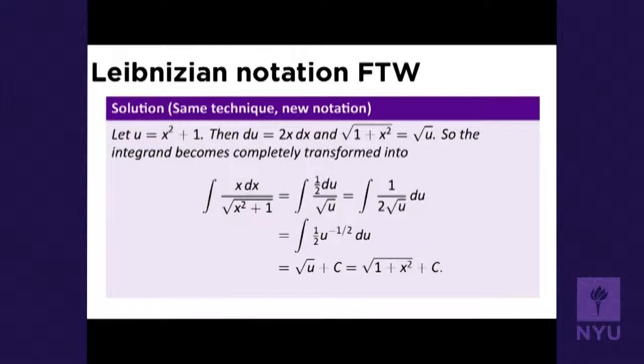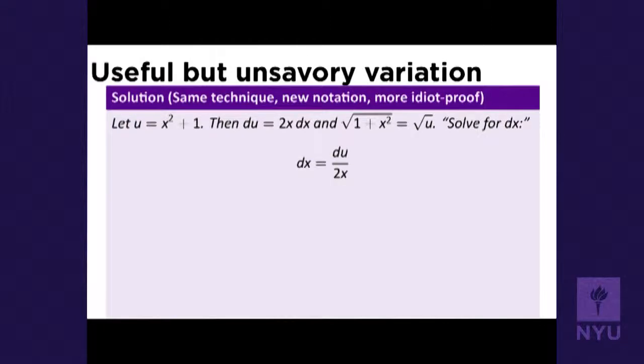A student asks how to get from 1/2 here. When you take a fraction and divide it by another fraction, you can combine the denominators. You could take this 1/2 and move it in front, so it would be 1/2 times du over √u, and then that 1/2 could go into the denominator. There's another slightly different way to do this that most students seem to like, though I have some reservations about the notation.